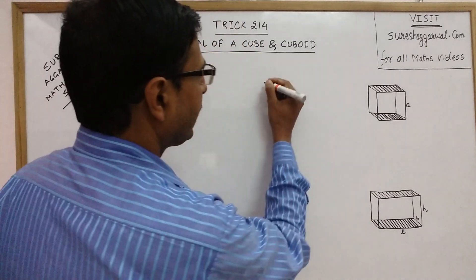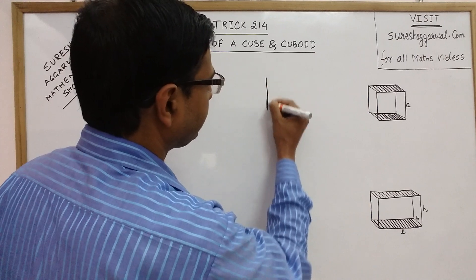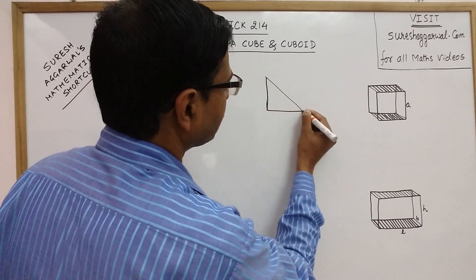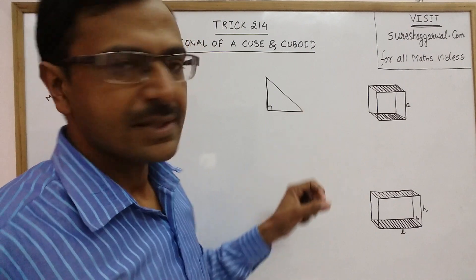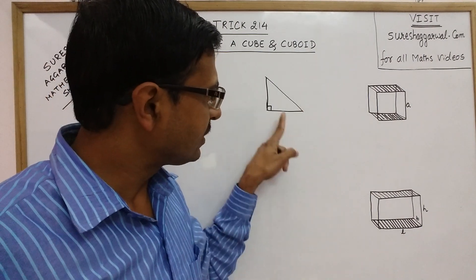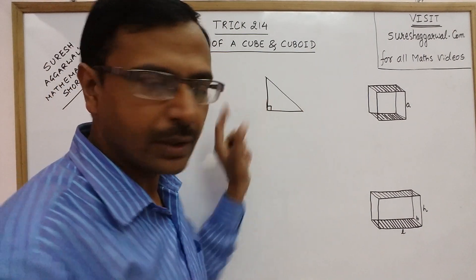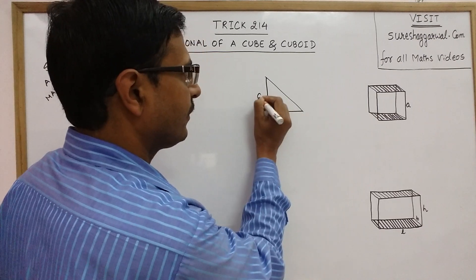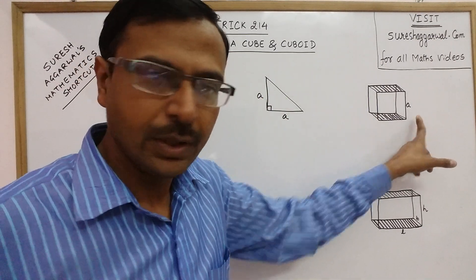If you draw a right-angled triangle and consider the two sides — the base and the perpendicular as A, which is equal to the side of this cube.